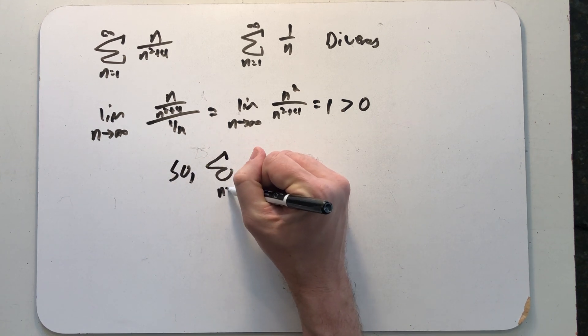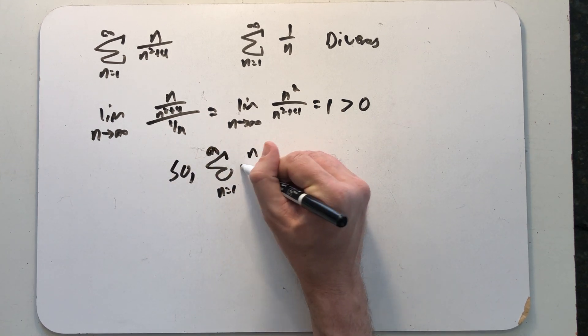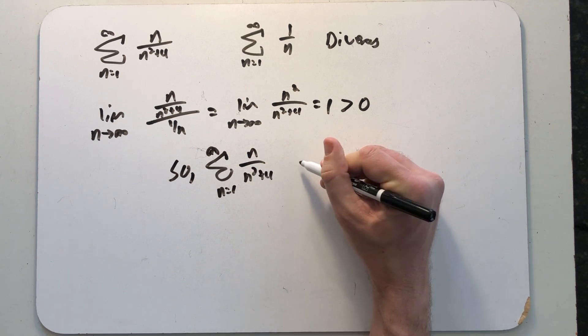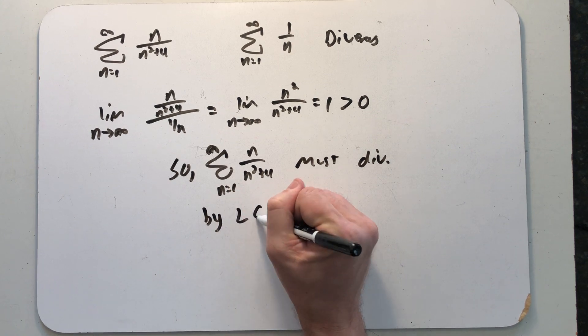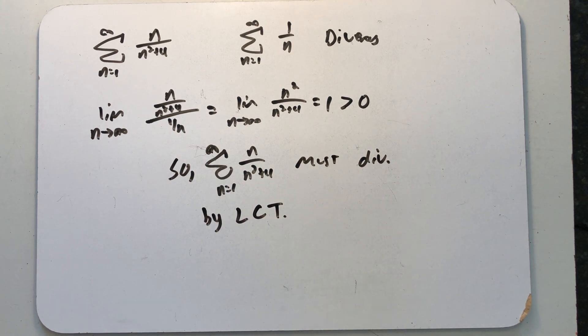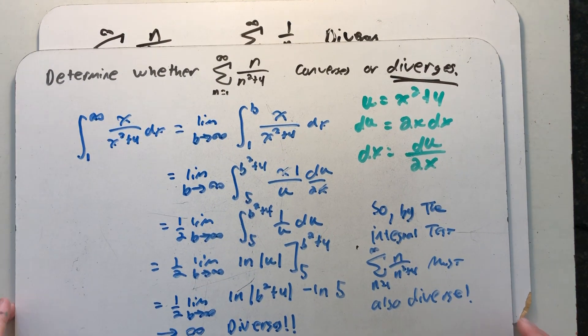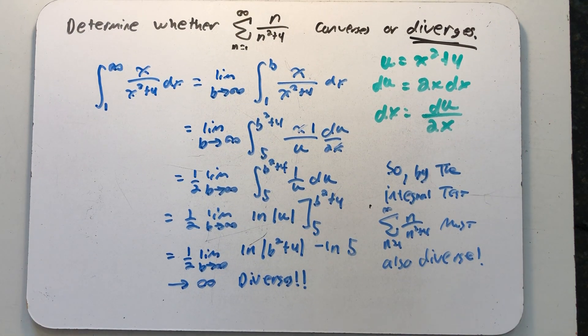So the series we started with, the sum from 1 to infinity of n over n squared plus 4, must diverge. And we know this by the limit comparison test. All right, two different tests giving me the same conclusion. And of course there are more tests that we know we could apply to show that this series diverges.